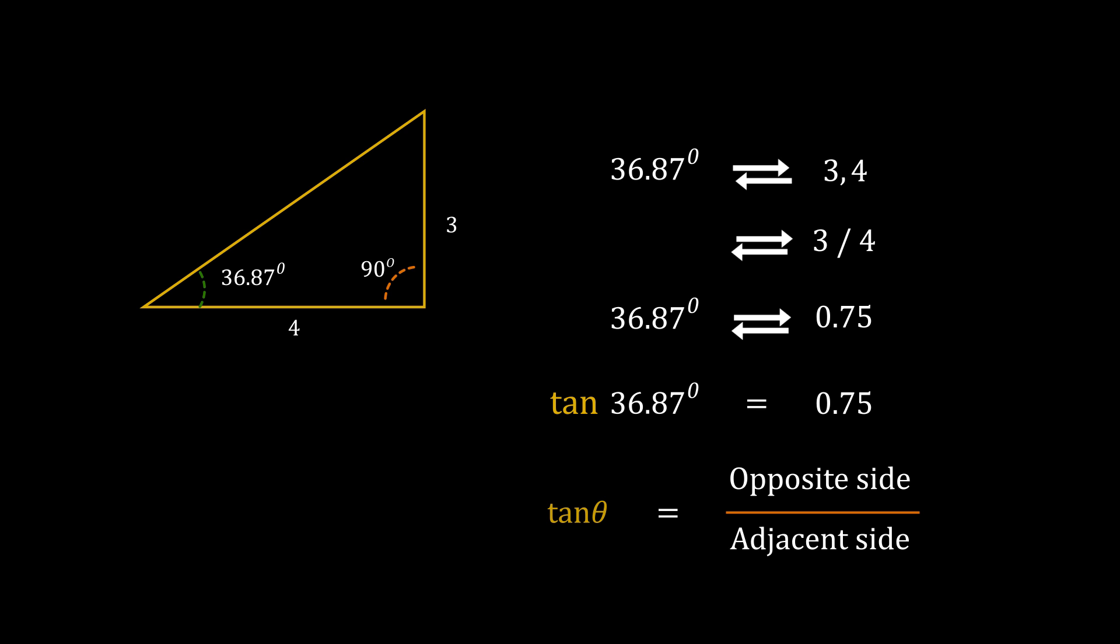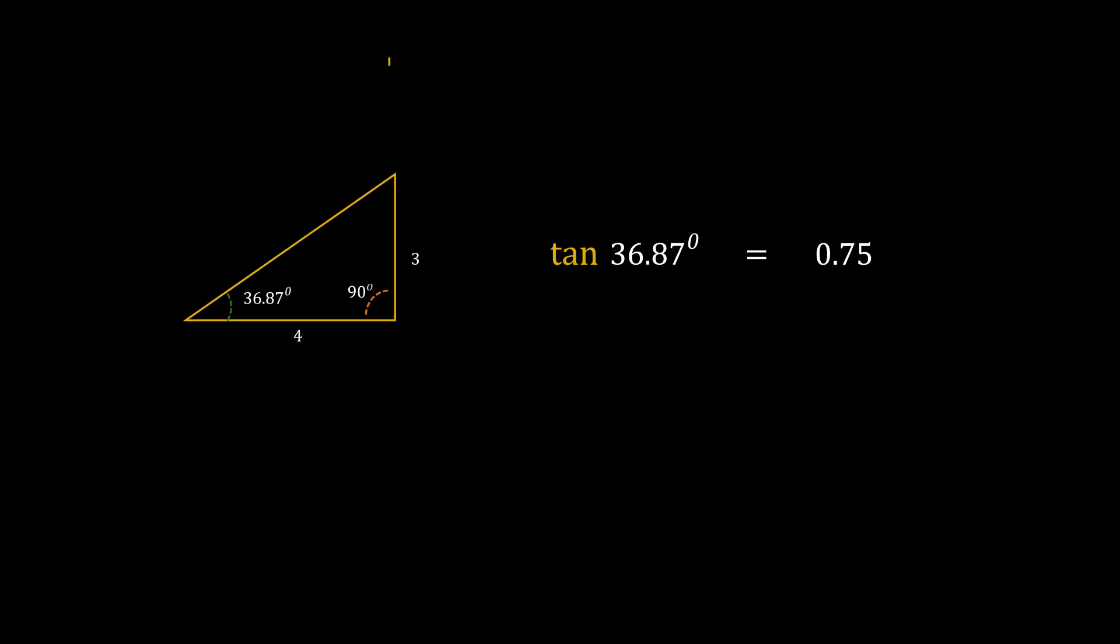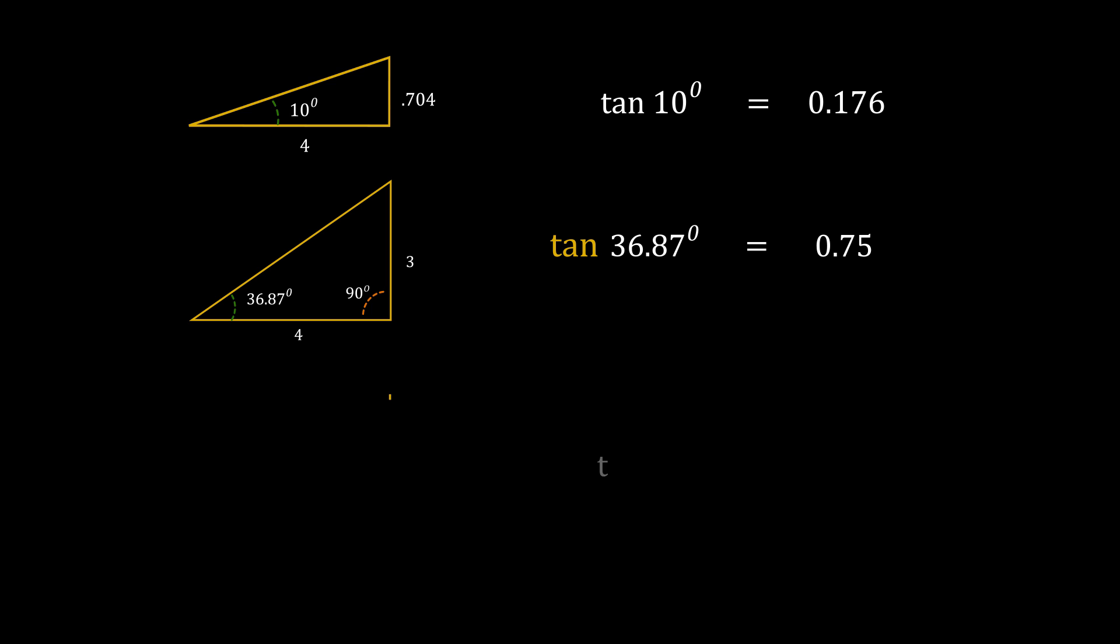Therefore, tan θ is opposite side by adjacent side. You have studied this in your math class, but I just represented the whole concept in a little different way so that you understand that it's a natural law to which mathematicians gave this fancy name called tangent. If you take different triangles, then you will find the tangent of 10 degrees is 0.176. This is fixed.